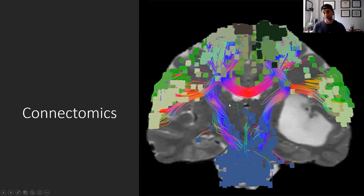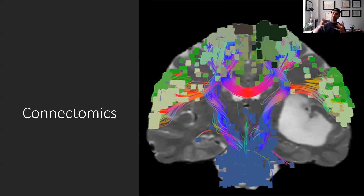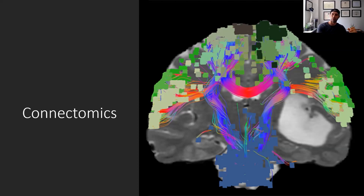There are limits to all these things. Navigation can be skewed — there's something called brain shift, which occurs after you release cerebrospinal fluid: the brain moves slightly and navigation becomes inaccurate. These are real problems we have to think about. And on top of that, how do you know you've gotten all the tumor out? The connectomics is telling us where the brain is, but how do we know where the tumor is?